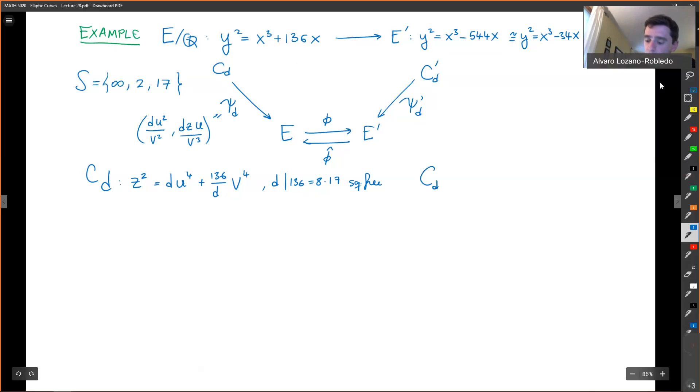And similarly, CD prime is z squared equals d u to the fourth minus 34 d v to the fourth. And here the d divides 34 and d is square free. And the map in that case, actually I'm going to write the map directly to E. So the map that goes all the way directly to E, that map is given by (z squared u squared v squared) and (z minus 34 v to the fourth minus d to d squared u to the fourth) over the u cubed v cubed.